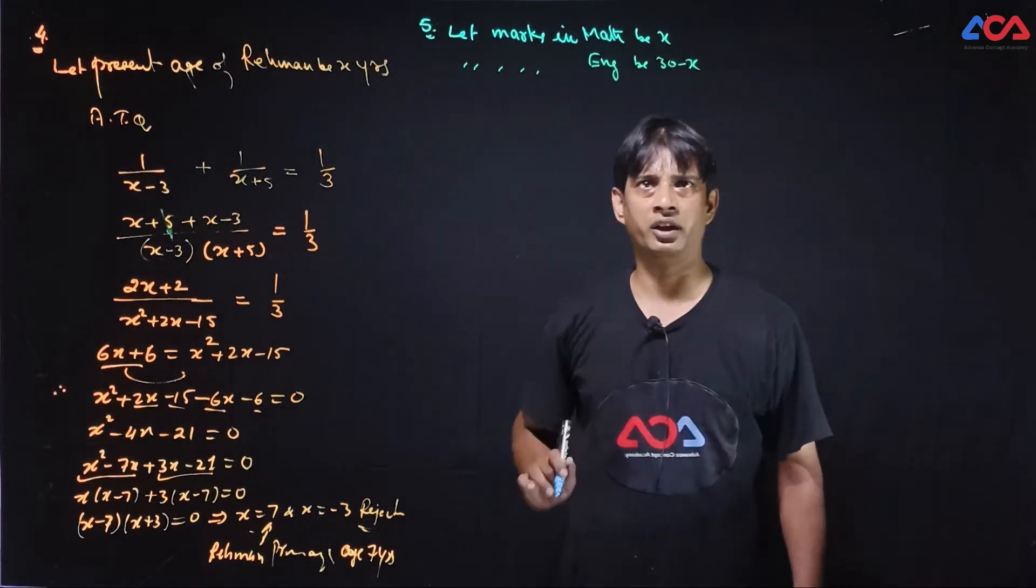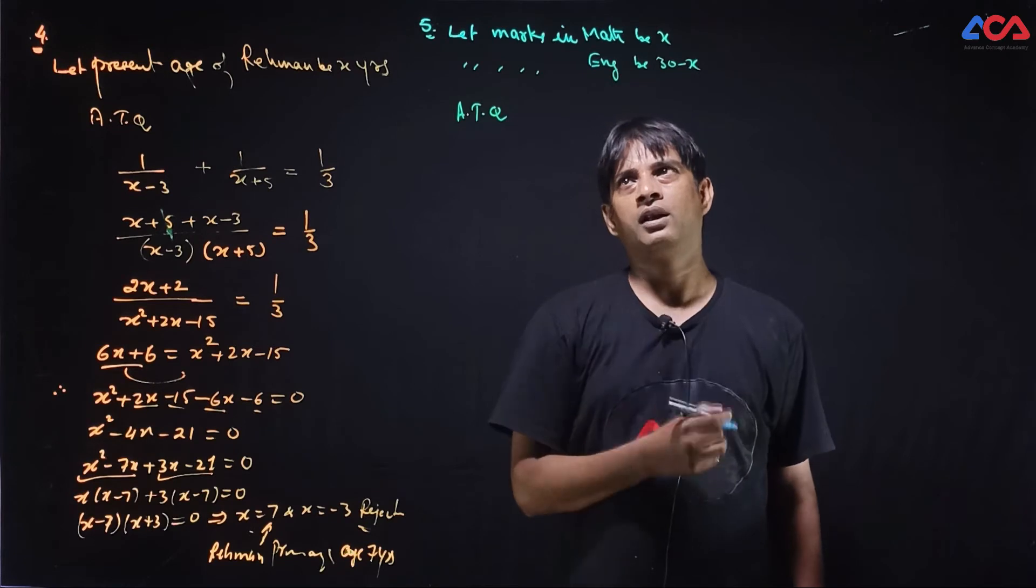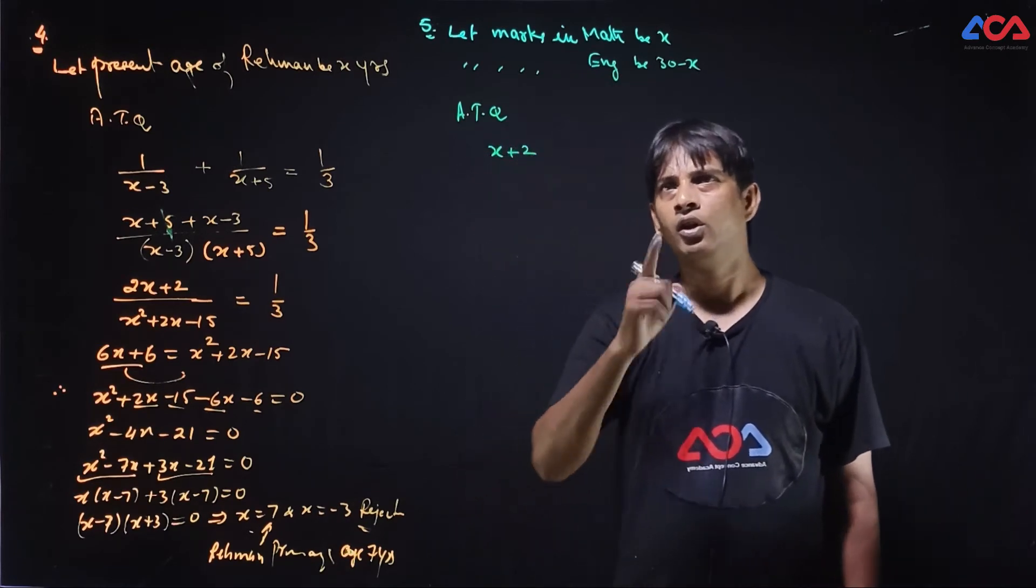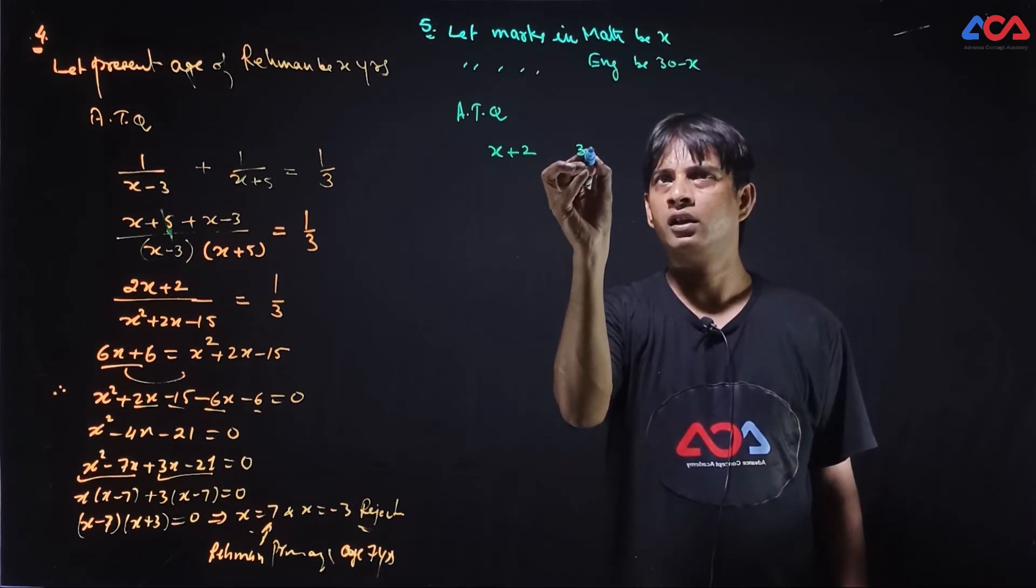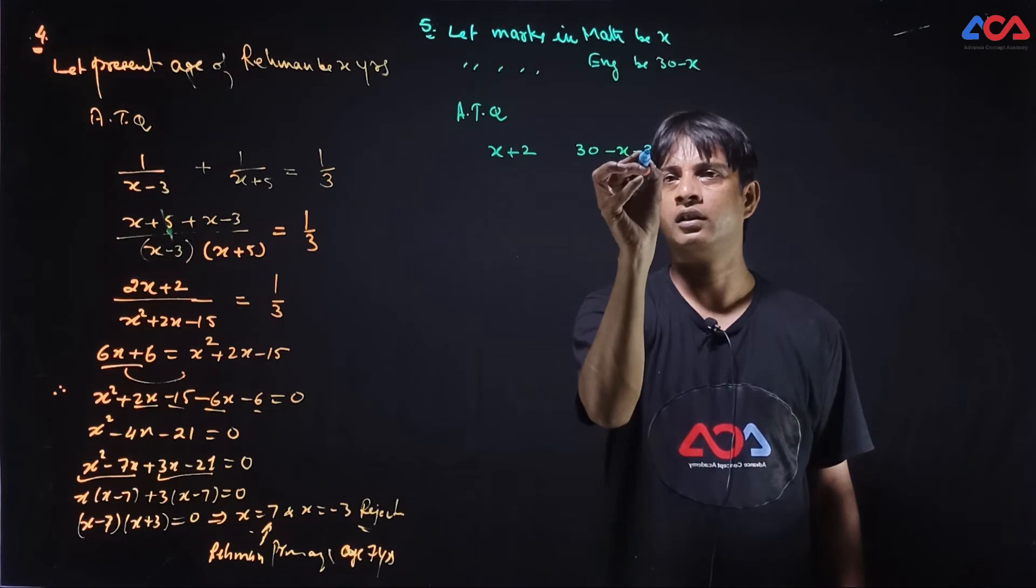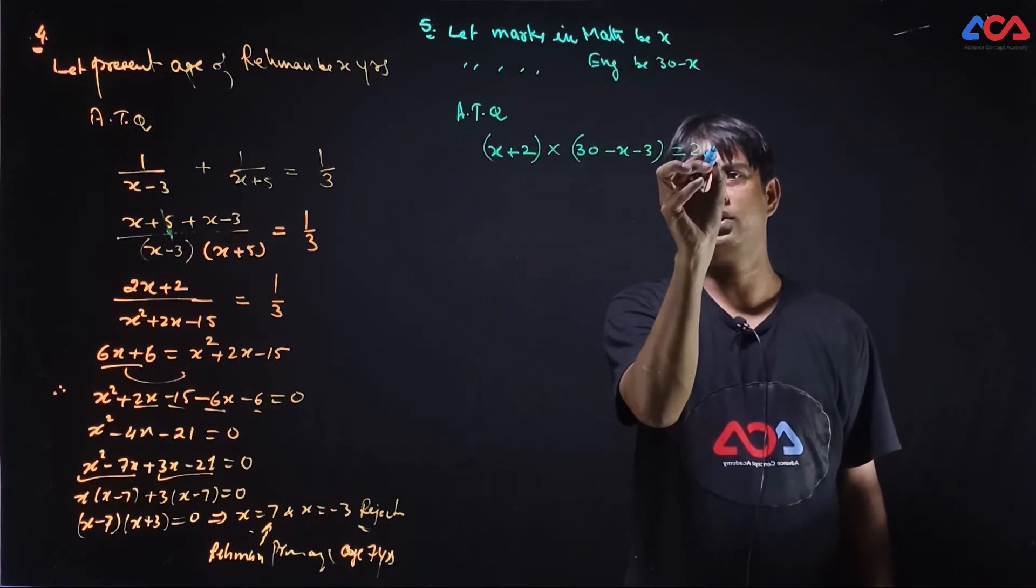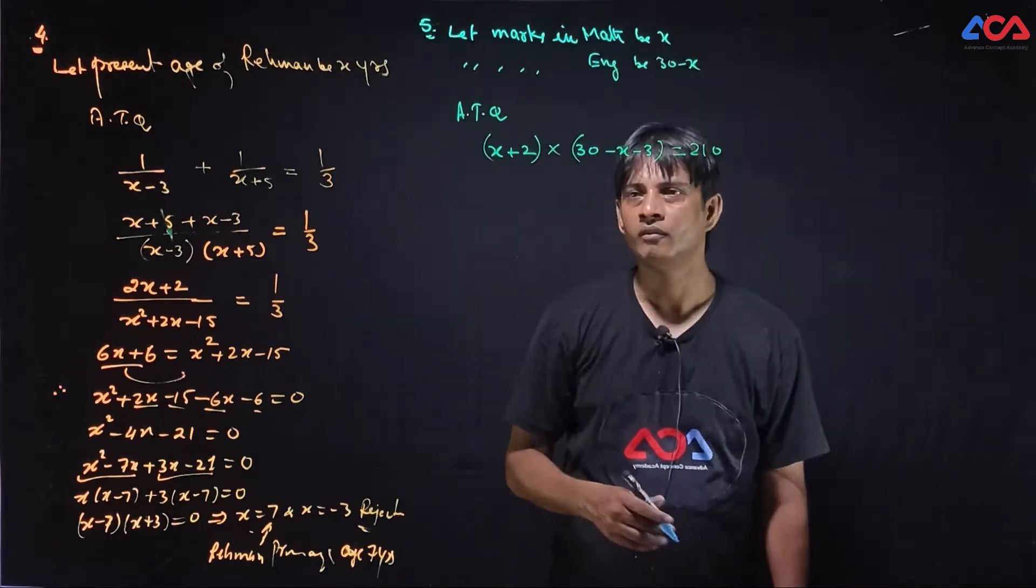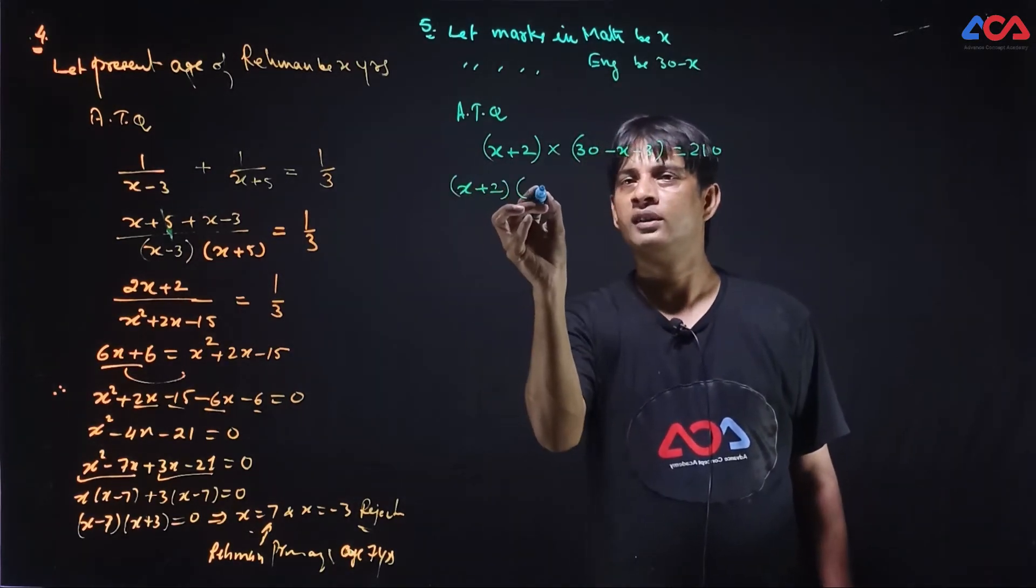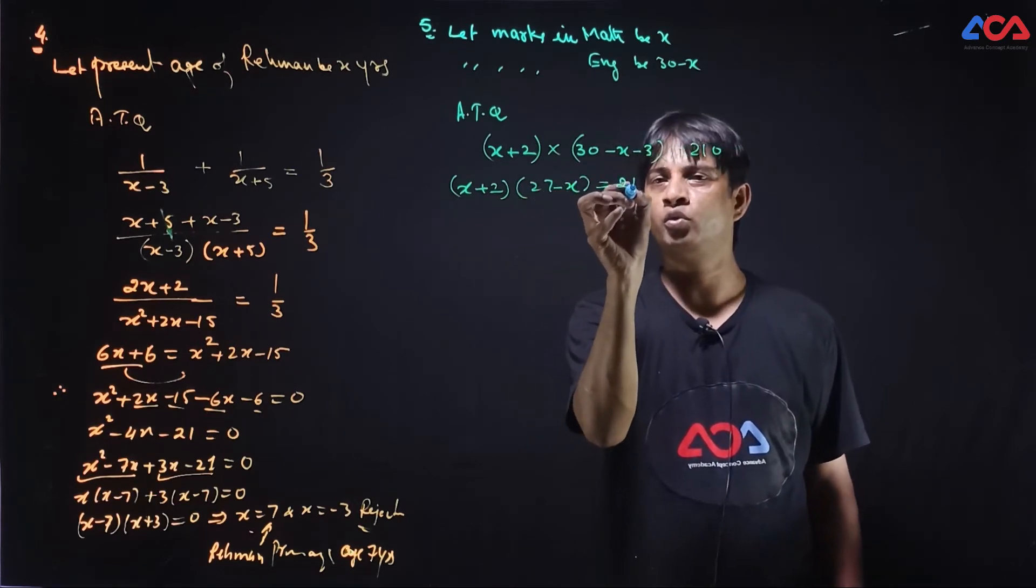Let marks in mathematics be x and marks in English be 30 minus x, because the sum is 30. According to question, if Shefali gets 2 marks in mathematics, x plus 2 marks. And in English, 3 marks will get less. So the product is 2, 1, 0. Therefore we can say x plus 2, 27 minus x which is equal to 2, 1, 0.